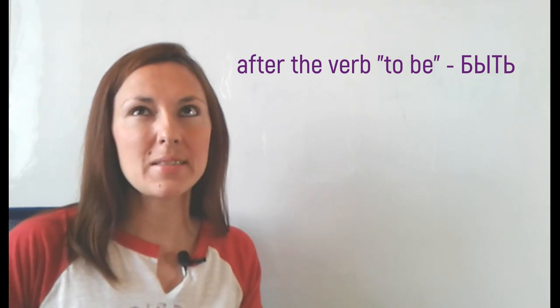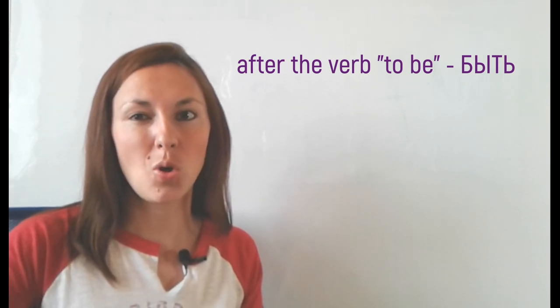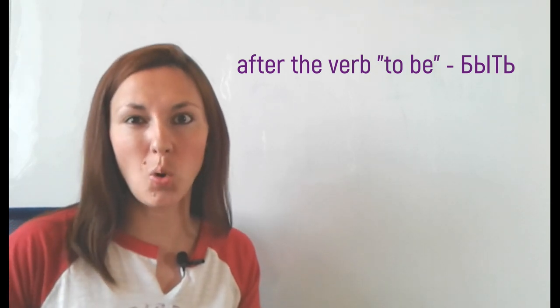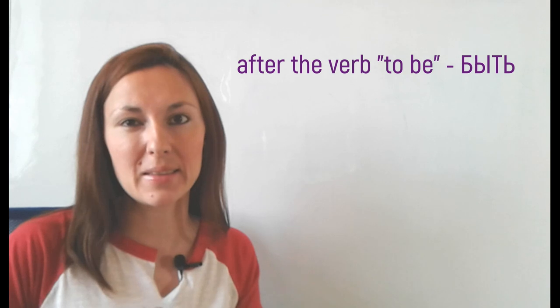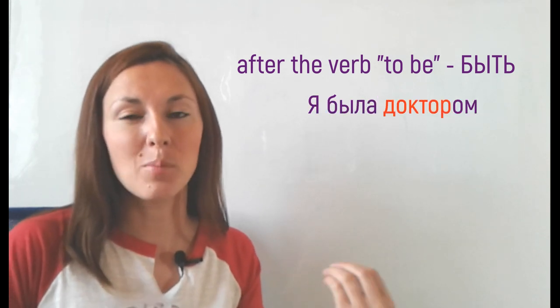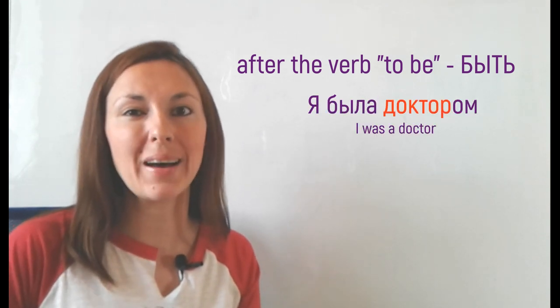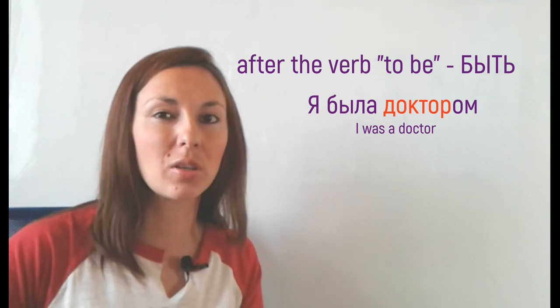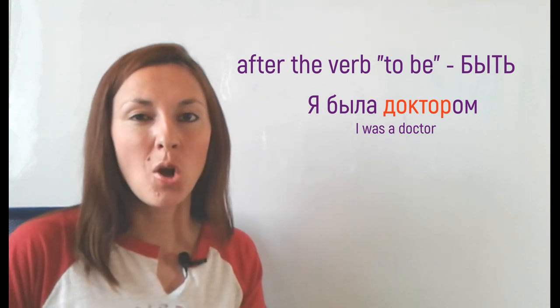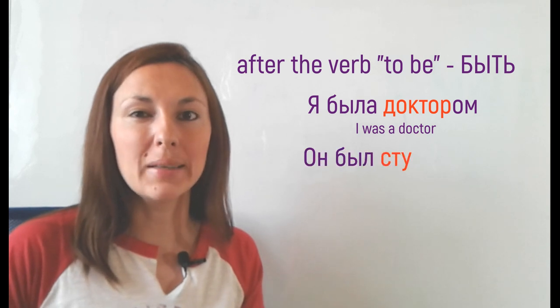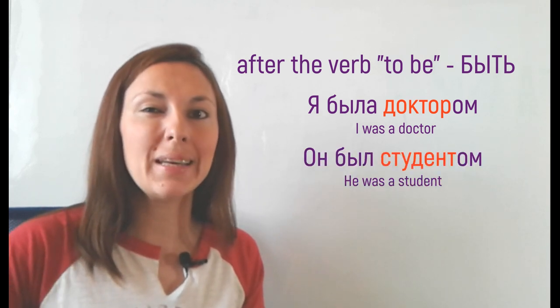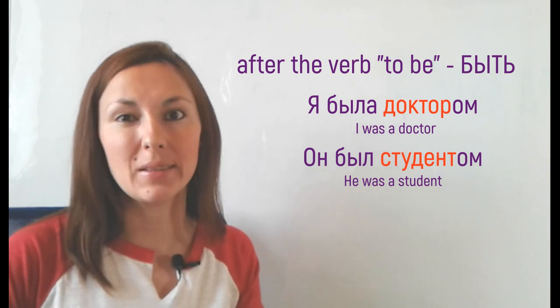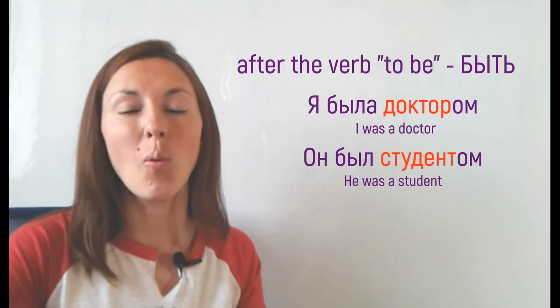So after these forms we put the object in instrumental case. How does it work? If I say I was a doctor, so the object after was, ДОКТОР, will be in instrumental case. I will say Я БЫЛА ДОКТОРОМ. I put ОМ to the word ДОКТОР. Or Он БЫЛ СТУДЕНТОМ. So a student is студент, again I add ОМ.